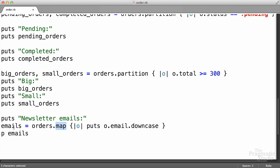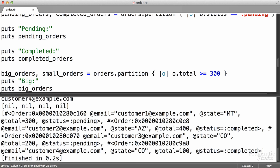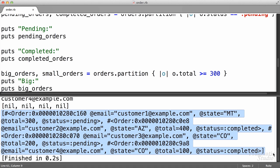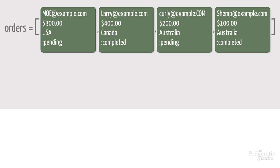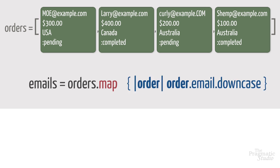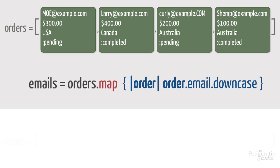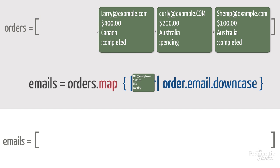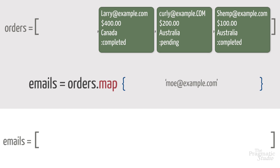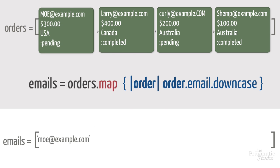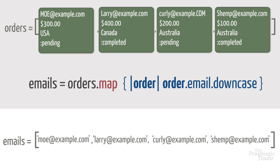One important thing to note here is that our original orders array hasn't changed. Map hasn't changed it, and we can print out our original orders array and we see that it still has all of our orders in there. So let's recap: we have an array of four order objects. The map method calls the block for each order and places the block's return value in a new array. The map method iterates through each successive order, mapping the order's downcase email to the corresponding position of the new array. Since we're calling map on an array of four orders, it returns an array of four emails. The returned array is always the same size as the original array.